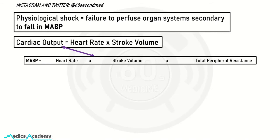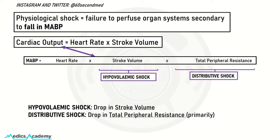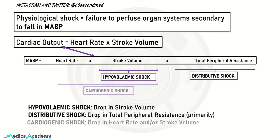There are three types of physiological shock that can cause a fall in mean arterial blood pressure. Hypovolemic shock causes this through a drop in stroke volume. Distributive shock causes this primarily through a drop in total peripheral resistance. Cardiogenic shock causes this through a drop in heart rate and/or stroke volume, and is also thought of as a pump failure.